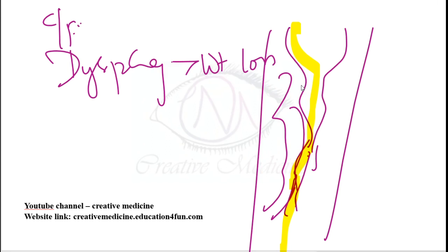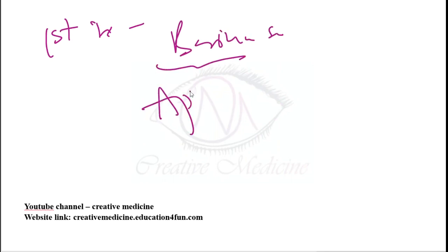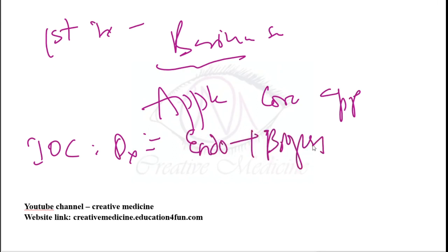The patient may also present with malignant tracheoesophageal fistula (coughing, choking, cyanosis, dyspnea) and hoarseness of voice due to recurrent laryngeal nerve involvement. First investigation done is barium swallow, which shows apple core appearance. Investigation of choice for diagnosis is endoscopy with biopsy.